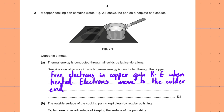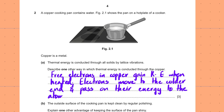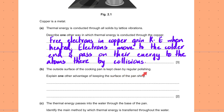This next statement is really important in all questions about free electron movement and heat transfer. The electrons transfer energy to the atoms there by collisions. Always write this statement whenever describing free electron heat transfer.